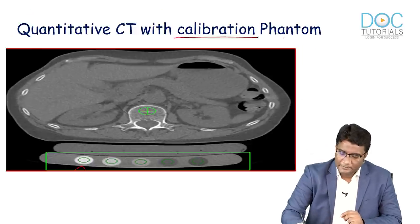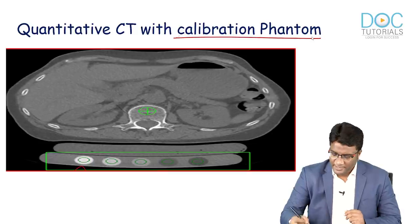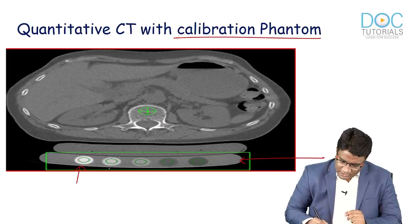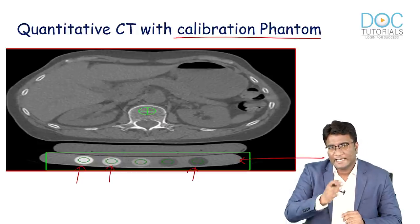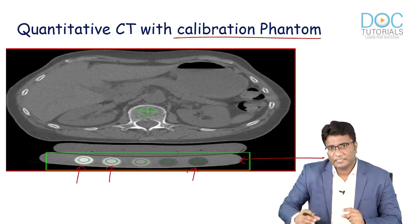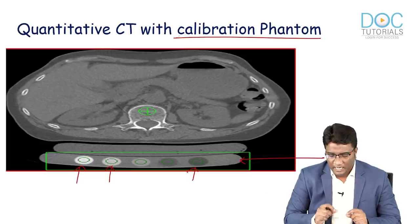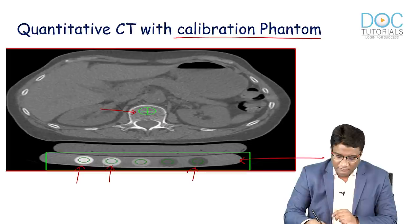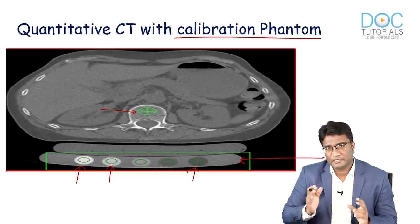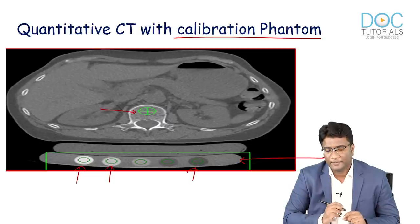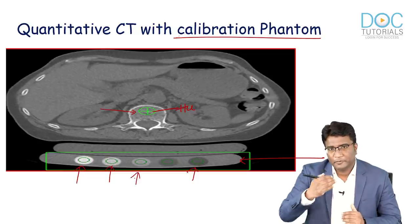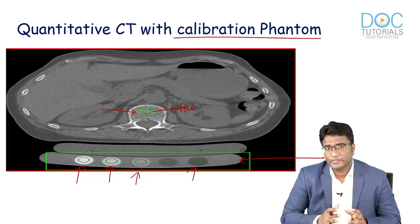During quantitative CT, a calibration phantom is kept behind the patient while the CT scan is performed. This phantom consists of crystals of hydroxyapatite of varying bone mineral density. Once the CT is done, the trabecular bone can be evaluated separately from the cortical bone and spinous or transverse processes. The Hounsfield units are then converted to bone mineral density units using the calibration phantom.